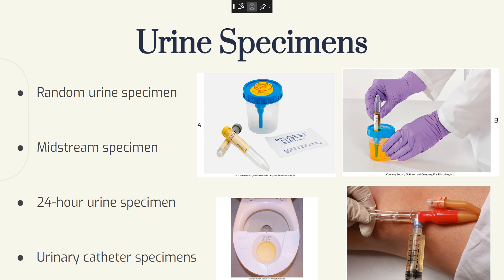Next we have the 24-hour urine specimen. All urine voided during 24 hours is collected. To prevent microbe growth, the urine is chilled on ice or refrigerated. The person voids to start the test with an empty bladder and you discard that urine. The test must be restarted if a voiding was not saved, toilet paper was discarded into the specimen, or the specimen contains stool.